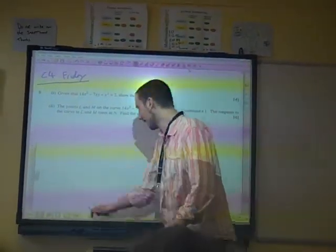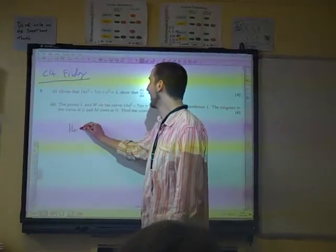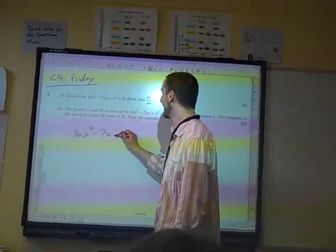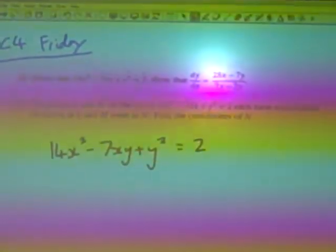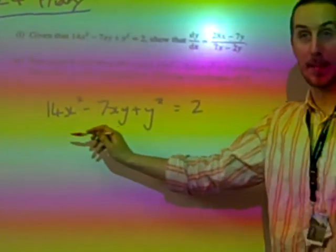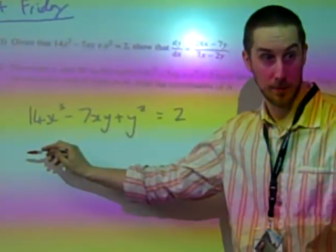Right, what do we do then? Differentiate everything implicitly, which means we get what? How many numbers?